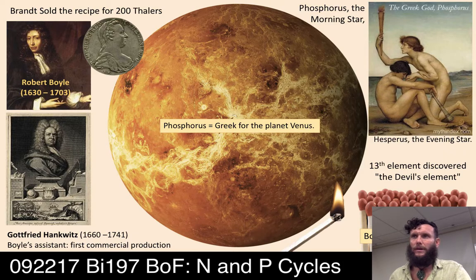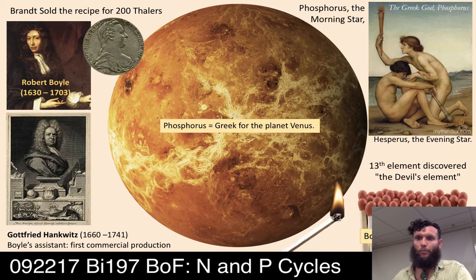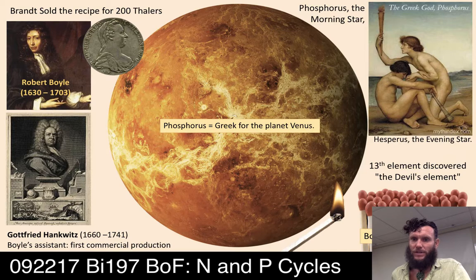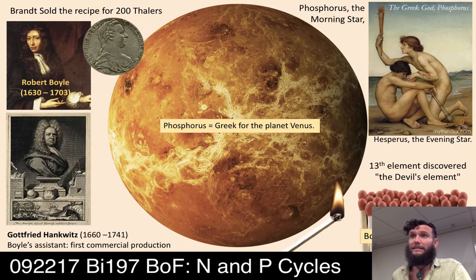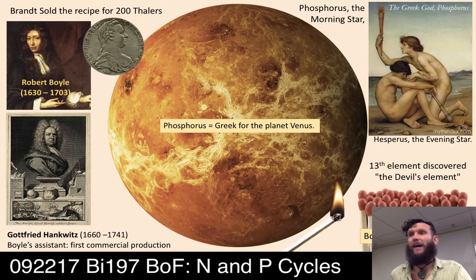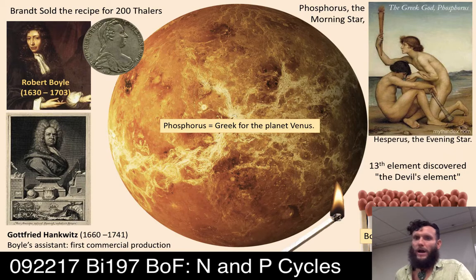Hennig Brandt named his substance phosphorus after the Greek god — the morning star. The Greek myth involves two brothers: phosphorus, the morning star appearing just as the sun came up, and his brother Hesperus, the evening star. At some point, the Greeks realized both were actually the planet Venus. The Greek word for Venus was phosphorus — the glowing light of morning and evening — which is why Brandt chose the name.